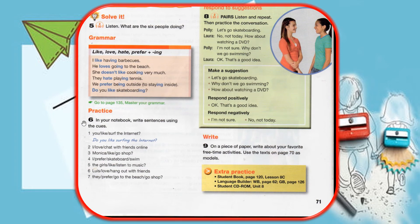Practice. In your notebook, write sentences using the clues. Number one: you like surf the internet. So you're going to write a question: Do you like surfing the internet? First you have the auxiliary verb, the subject, the verb like, the verb with -ing, and the complement. Don't forget the question mark. You're going to work on this exercise in the worksheet that I will send you.